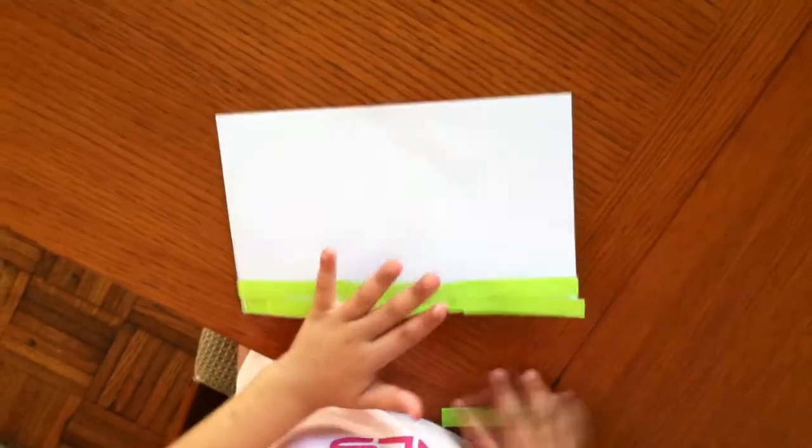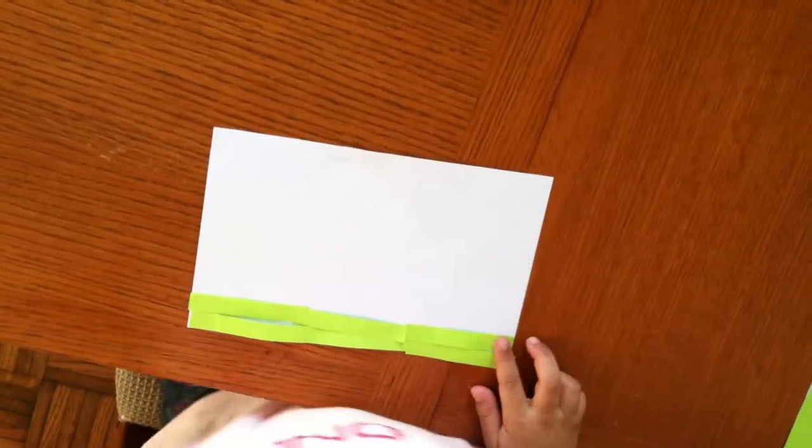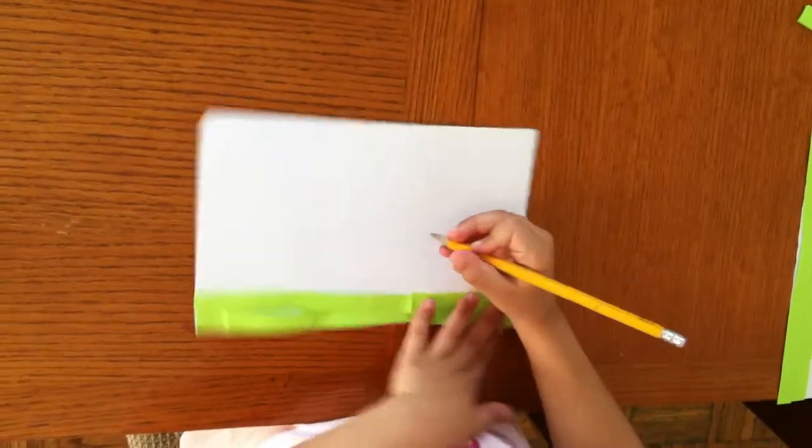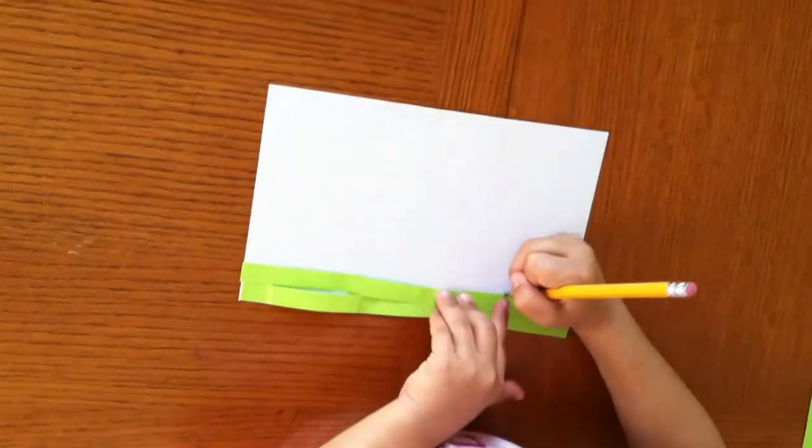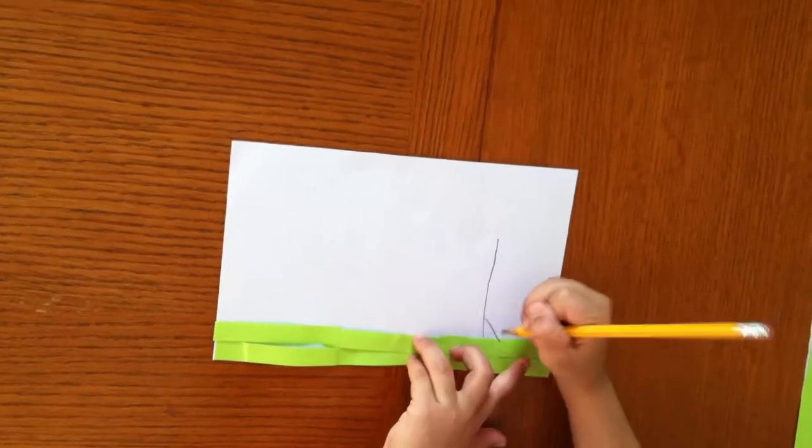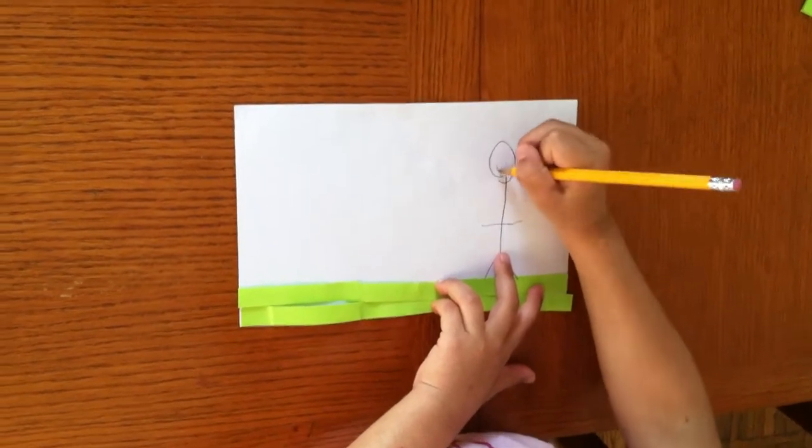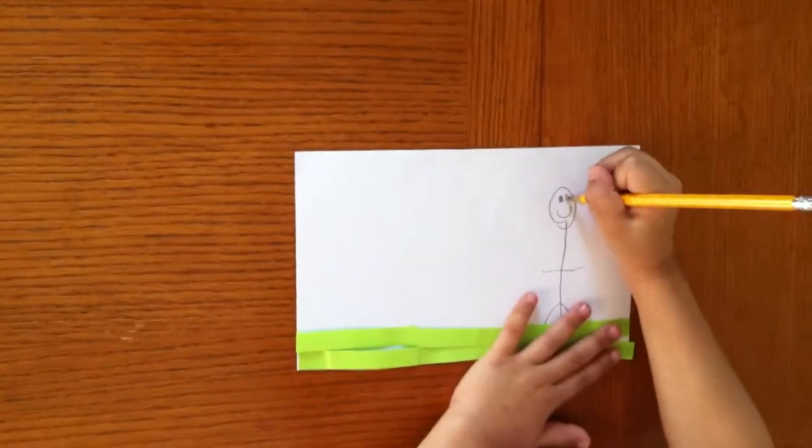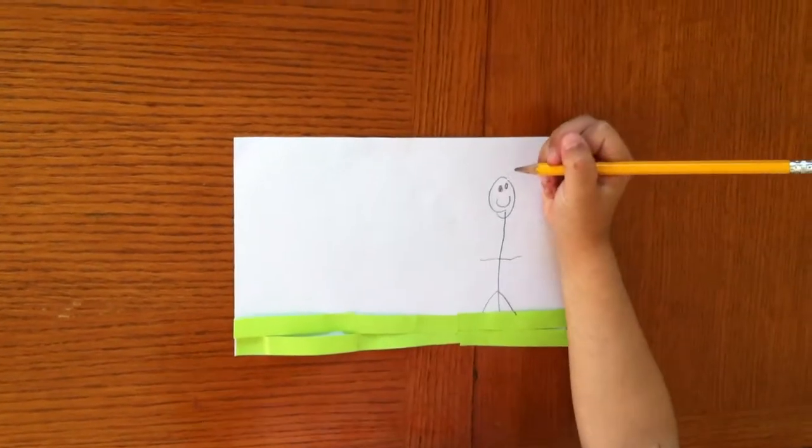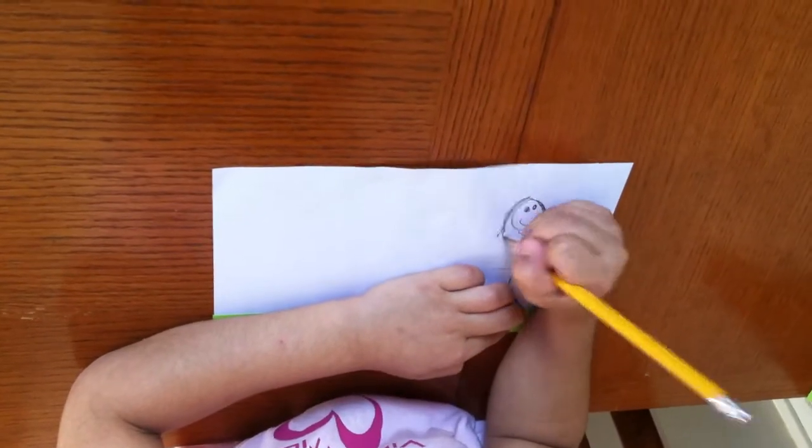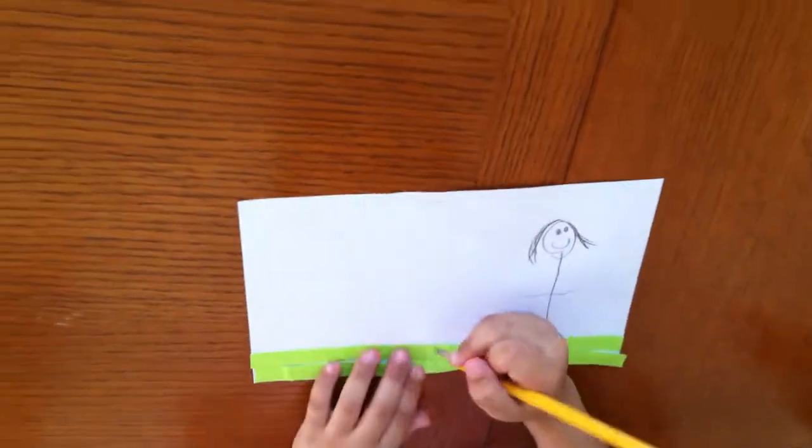And then when you're done with the sticky notes, you're going to use your pencil and draw a girl or a boy. And then a flower.